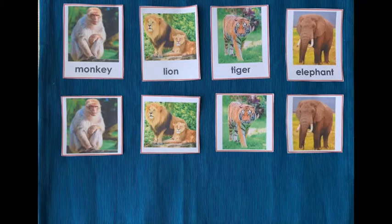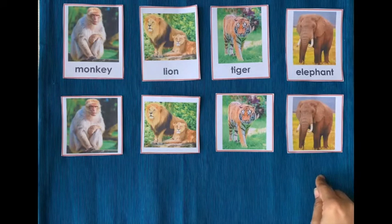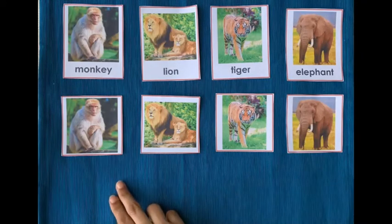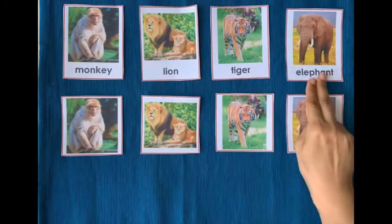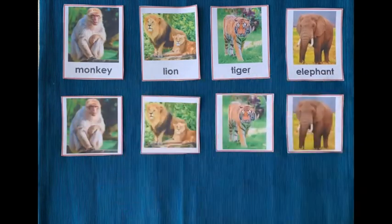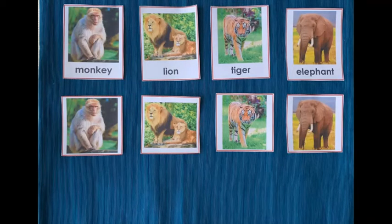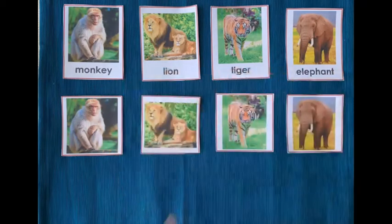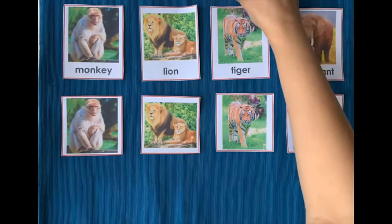Once the matching activity is completed, you can do a revision of all the animals. Today we have looked at monkey, lion, tiger, and elephant. All these animals give birth to babies, the mother takes care of the baby, and the baby drinks the mother's milk. They also have hair or fur on their body. These animals are called mammals.